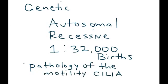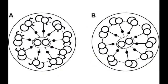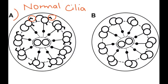Here is a photo showing normal cilia. You can see these little arms — I'll circle them — and those arms are called dynein. These arms help with motility. Over here, you have cilia that are missing the dynein arms.